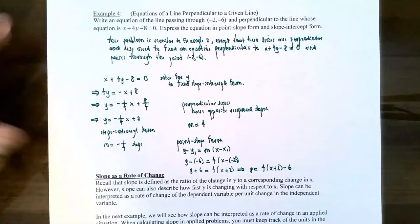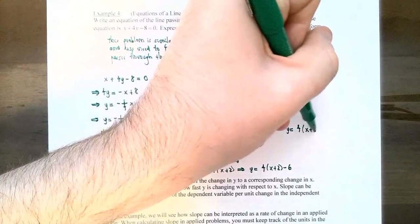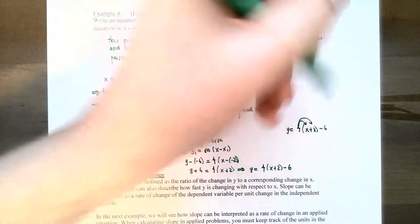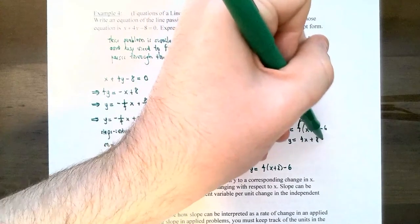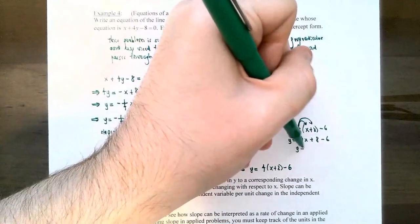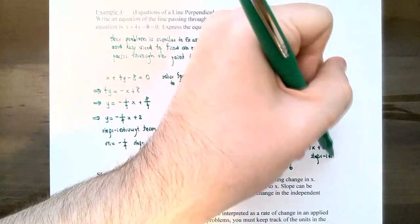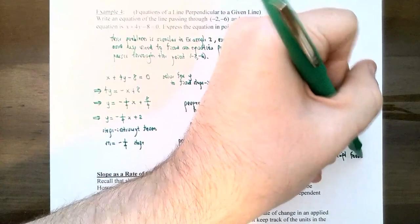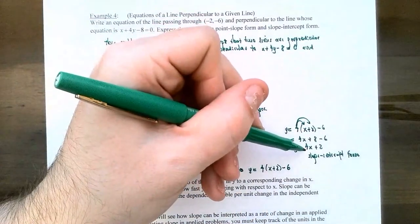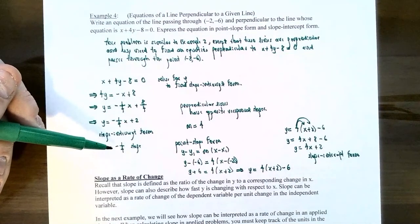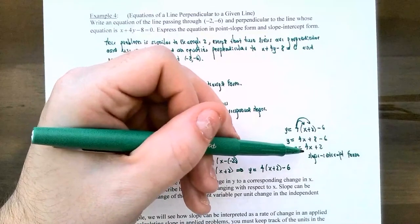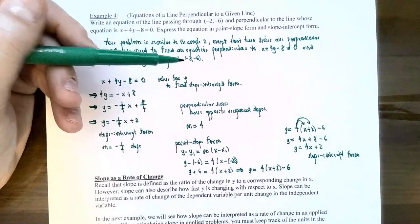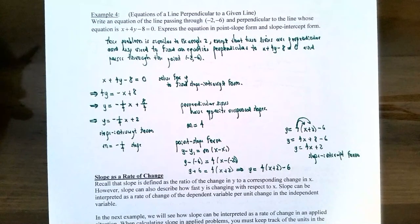To get slope-intercept form, distribute the 4 through the parentheses: y equals 4x plus 8 minus 6, which combines to y equals 4x plus 2. This is slope-intercept form. This line has slope 4 and the other line had slope negative one-fourth, confirming they are perpendicular. The line y equals 4x plus 2 does pass through the point negative two, negative six. This gives you an idea of how to use parallel and perpendicular relationships to compare slopes and find equations of lines.